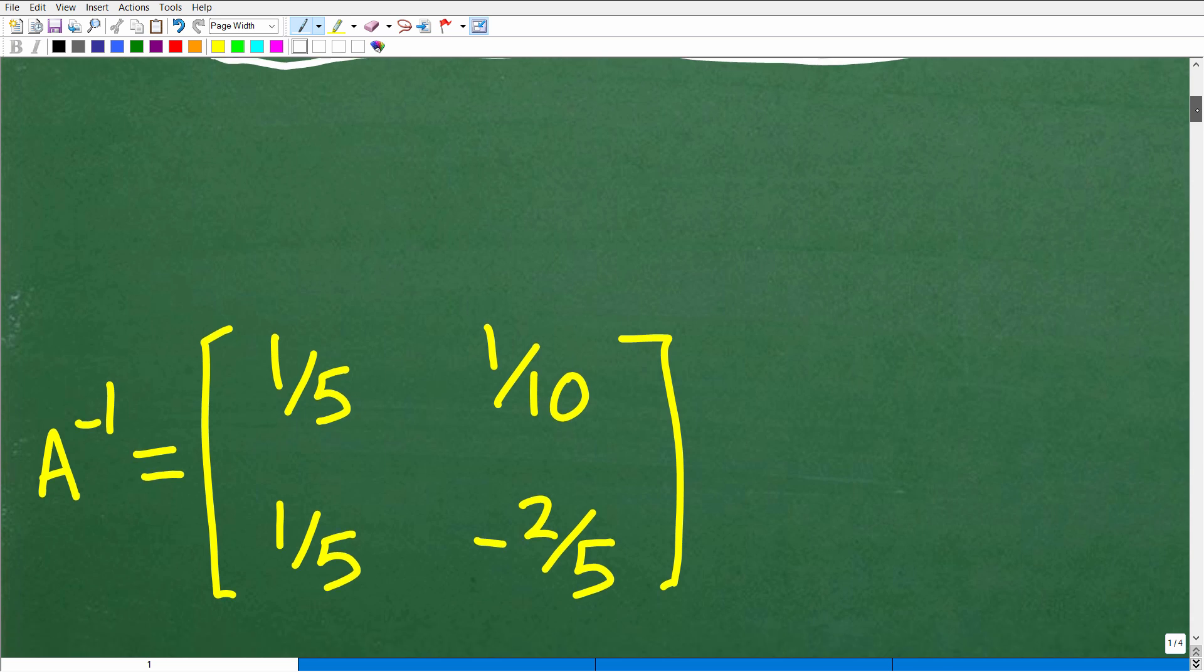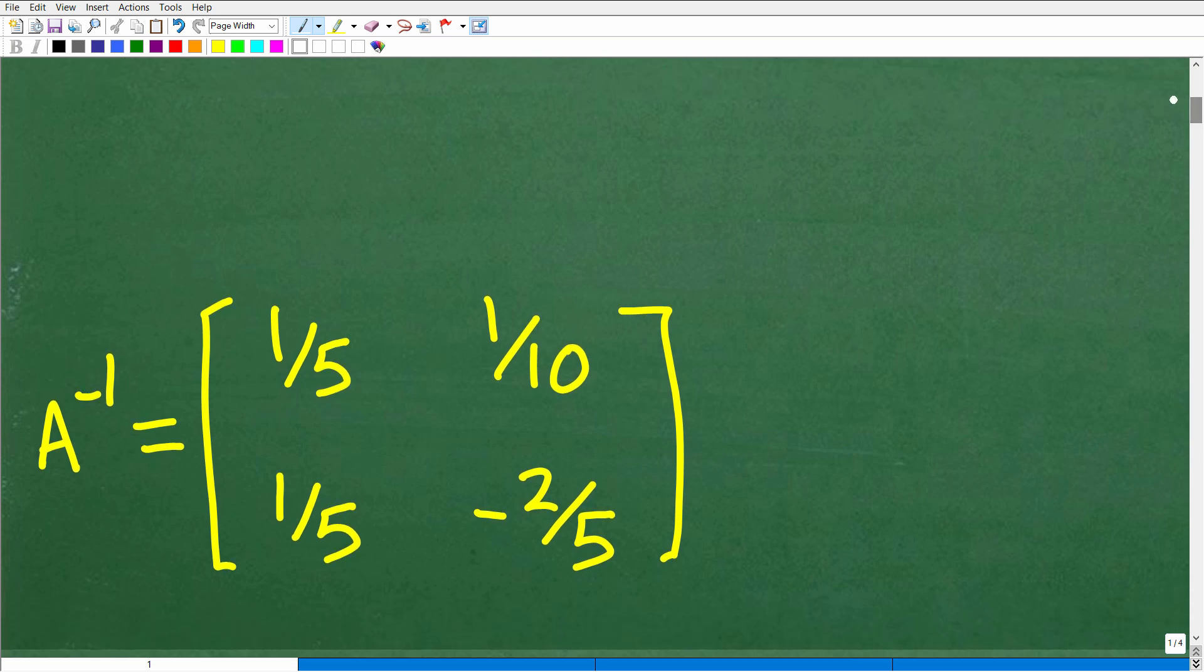The answer is the following. So given that matrix A, its inverse is the following matrix: 1/5, 1/10, 1/5, and negative 2/5. These are the entries, respective rows and columns of this particular matrix.